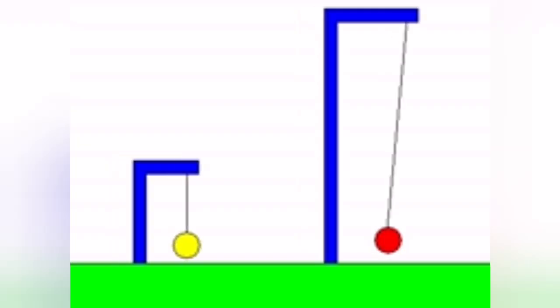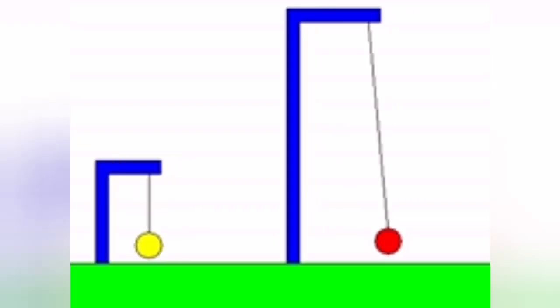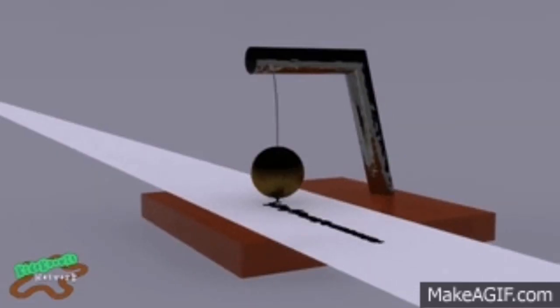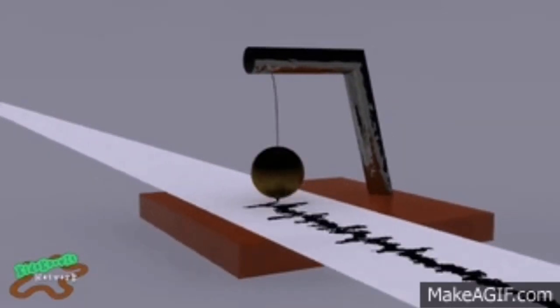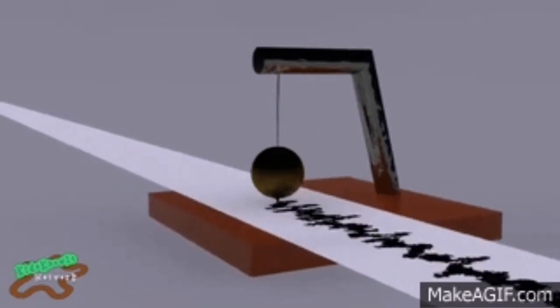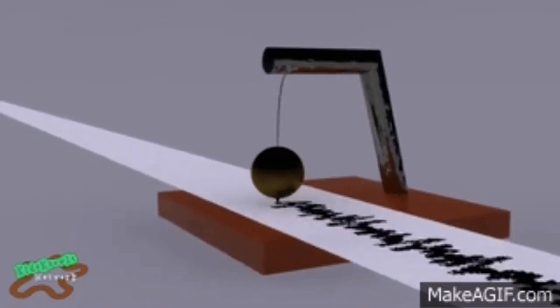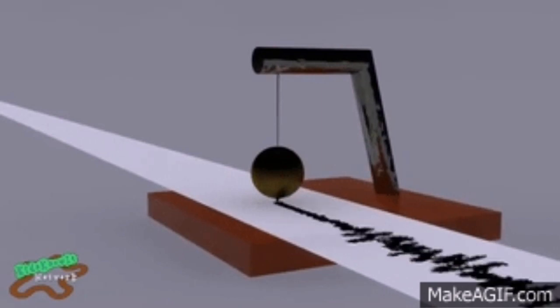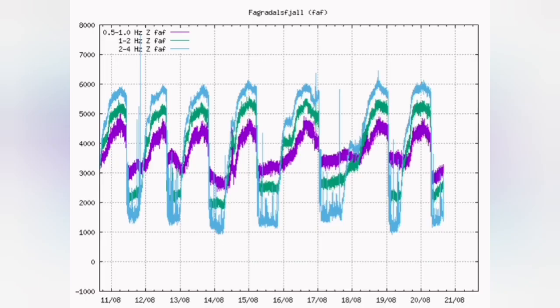A seismograph is a mass which, due to inertia, stays in its place when the base of it and the land which is attached to it moves. If you attach a pen to this mass during the tremors, it will create these patterns that you see here.